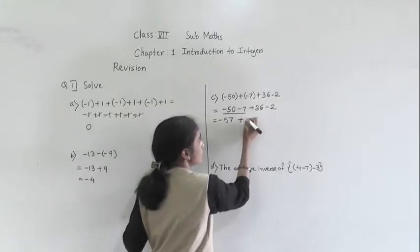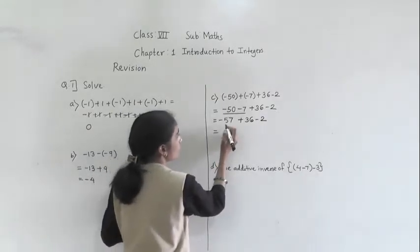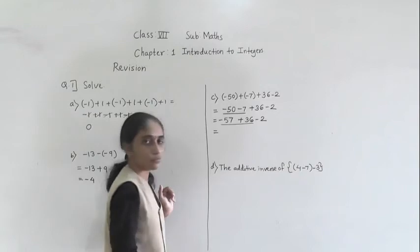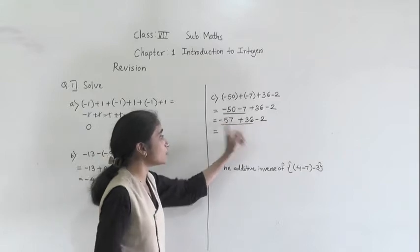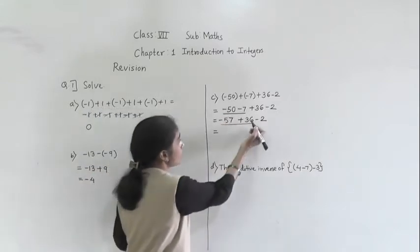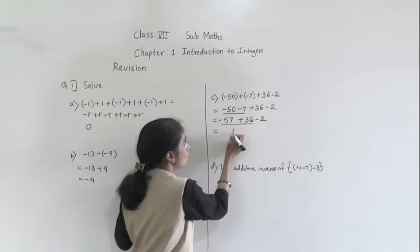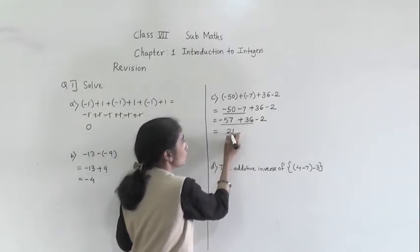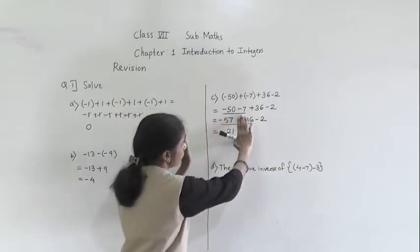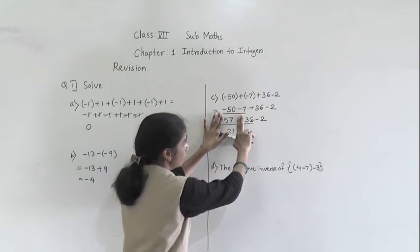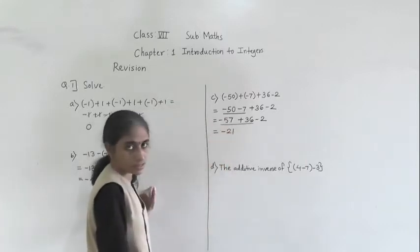Now remaining numbers we write as it is: plus 36 minus 2. In the next step we take the first two numbers: minus 57 plus 36. Minus plus means minus. So subtract 36 from 57: 7 minus 6 is 1, 5 minus 3 is 2. We got 21. Now add the sign - which is greater number, 57 or 36? 57 is greater, so for the answer minus sign.